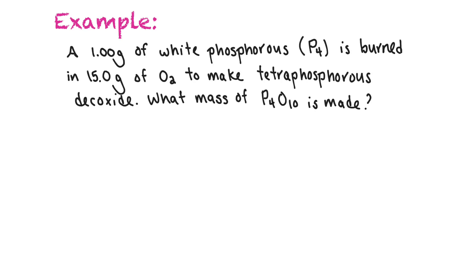Sometimes we're also asked to predict the mass of product produced. In this example, a 1.0 gram chunk of white phosphorus is burned in 15 grams of oxygen to make tetraphosphorus decoxide, and we need to find the mass of P₄O₁₀ produced.